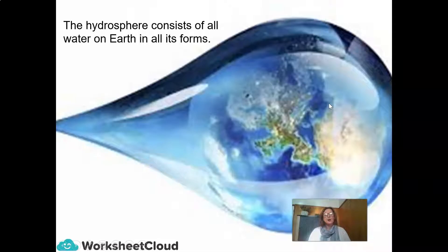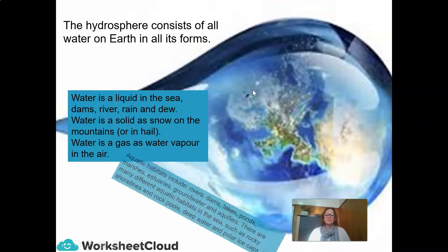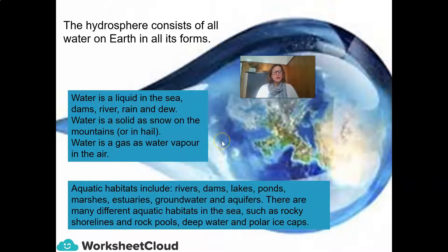The hydrosphere consists of all water on Earth in all its different forms. It could be liquid in the sea, dams, rivers, rain, and dew. It could be as solid as snow on the mountains or in hail, or as a gas, as water vapour in the air. Aquatic habitats — those are water habitats — include rivers, dams, lakes, ponds, marshes, estuaries, groundwater, and aquifers.